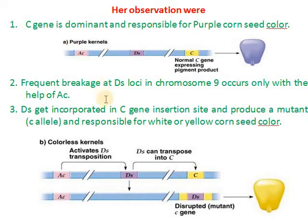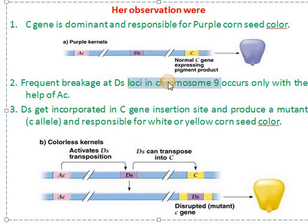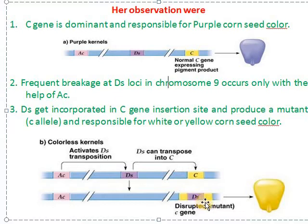Barbara reported this from chromosome number 9. In the presence of the DS element inserted into the C gene, the C gene function is disrupted and will be stopped. The C gene function will be disturbed when the DS element is inserted into it.